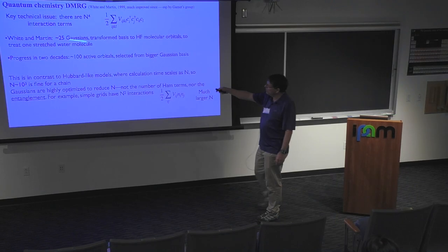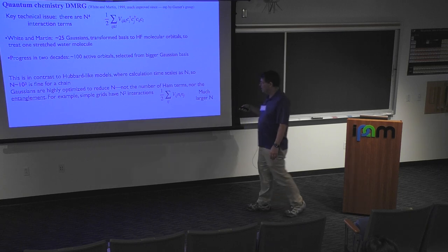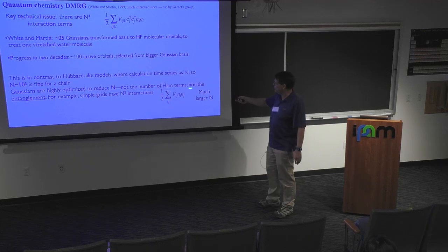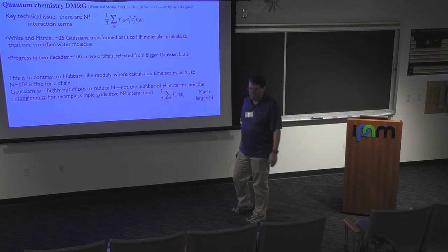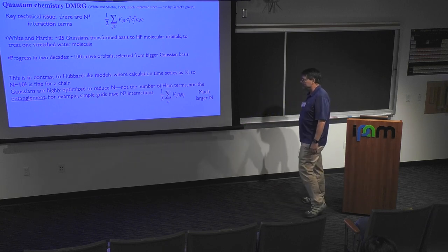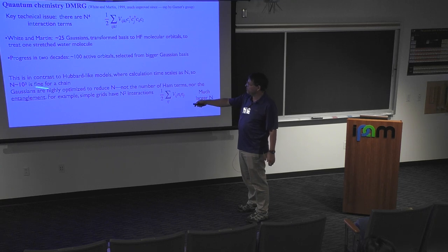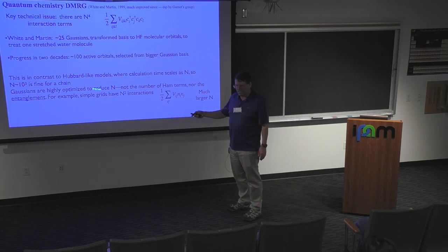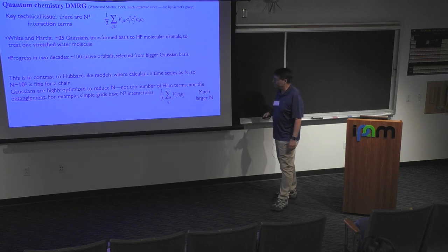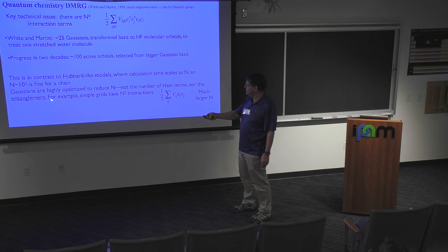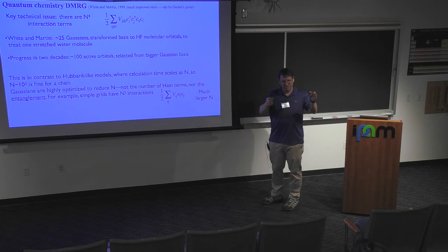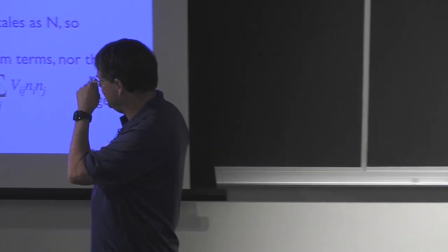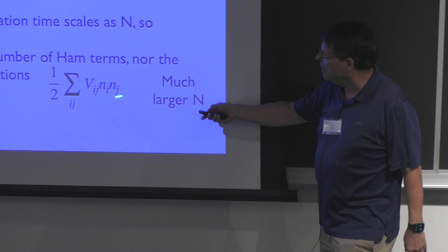Now you're still limited within this framework to around 100 or a little more active orbitals. You can go a bit farther by selecting just the active ones from a bigger Gaussian basis with a more restrictive calculation, and there are impurity-type methods like DMET. But if you contrast what pure DMRG does compared to Hubbard-like models: in Hubbard-like models the calculation scales as N, while here there's a term going as N-cubed and another as N-to-the-fourth. With Hubbard-like models we can do thousands of sites. The issue is that Gaussians are highly optimized to reduce the number of basis functions, but not to simplify the form of the interaction, and they don't necessarily reduce the entanglement.